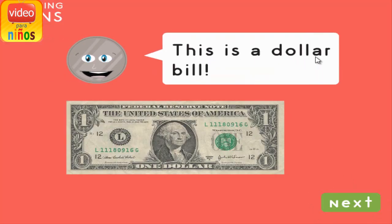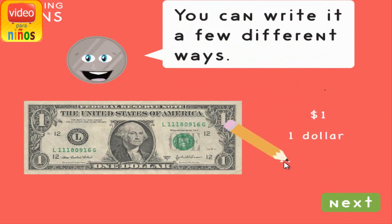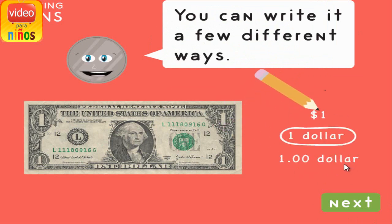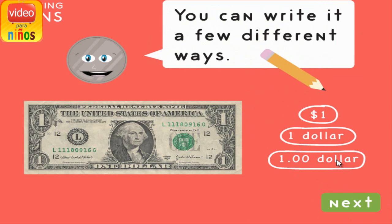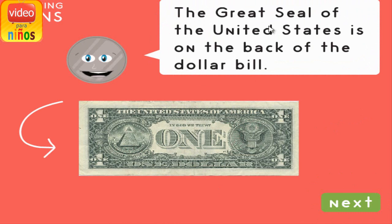This is a dollar bill. A dollar bill is worth 100 cents. You can write it a few different ways. President George Washington is on the front of the dollar bill. The great seal of the United States is on the back of the dollar bill.